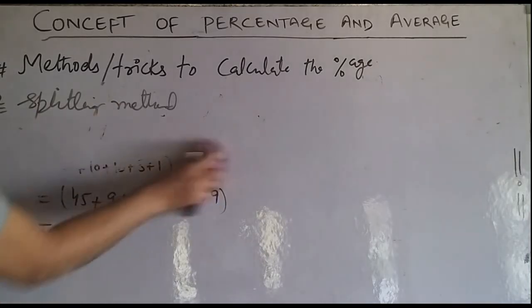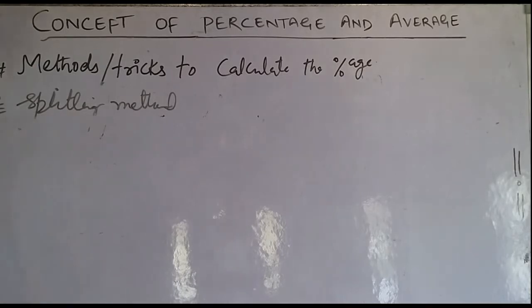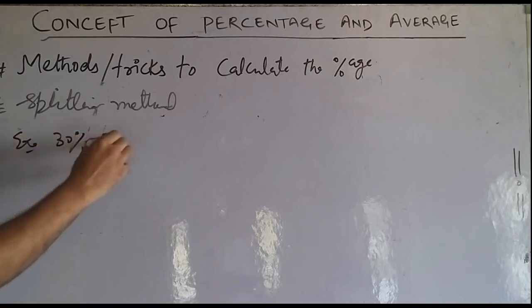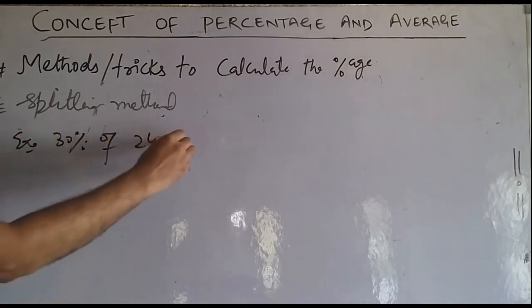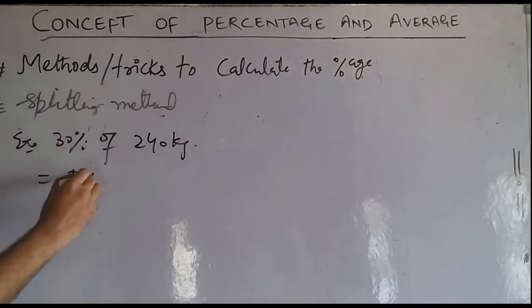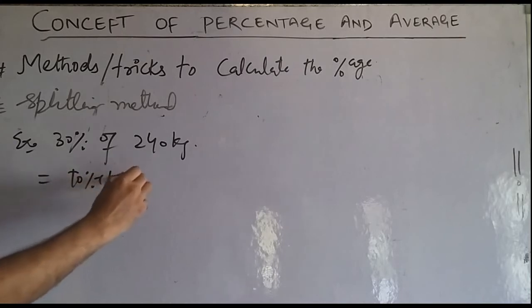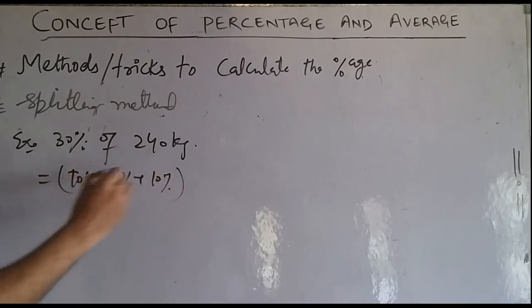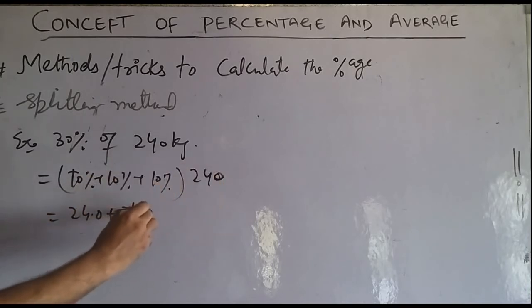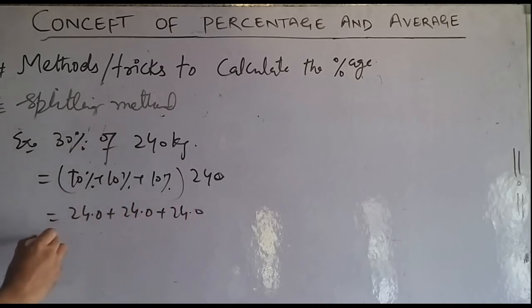This is a very common question type. For example, 30% of 240 kg. We separate it as 10% + 10% + 10% of 240. 10% of 240 is 24, so 3 × 24 = 72 kg.